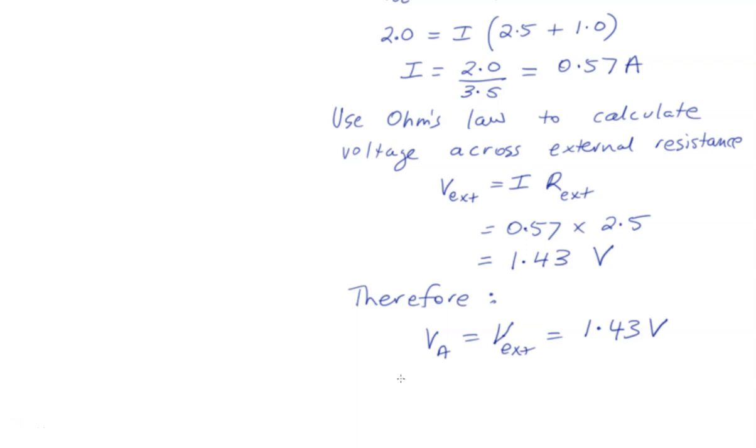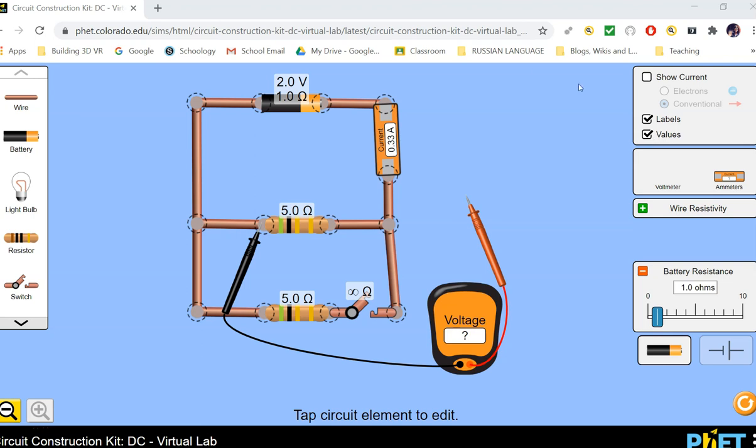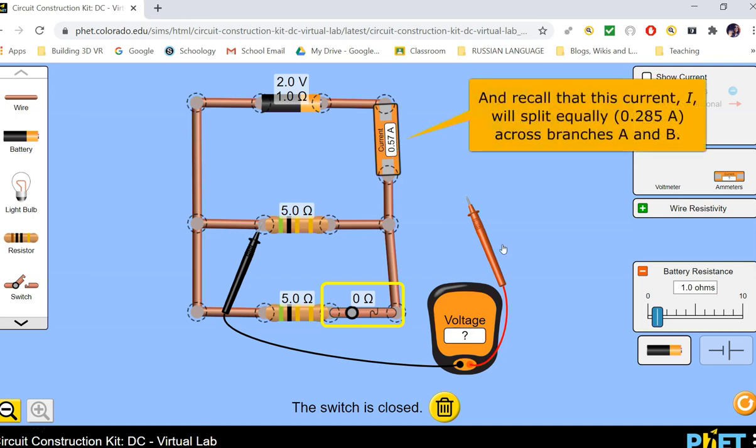So we found that the voltage across resistor A is 1.43 volts, and we can use the PhET simulator to just check our values are correct. So we've got a battery that has an open circuit voltage of 2 volts, it has an internal resistance of 1 ohm. We can see that both resistors A and B have 5 ohms resistance.